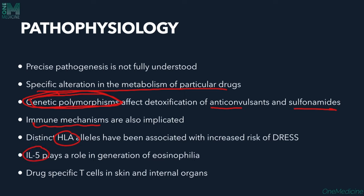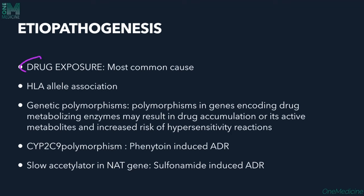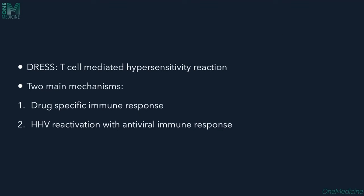Drug-specific T cells are found in the skin and internal organs. Genetic polymorphisms in genes encoding drug-metabolizing enzymes may result in drug accumulation or accumulation of active metabolites, increasing the risk of hypersensitivity reactions. For example, CYP2C9 polymorphisms are associated with phenytoin-induced adverse drug reactions including DRESS.